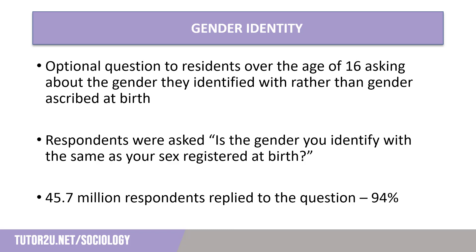A further optional question in the census was gender identity, and once again this was only asked to respondents over the age of 16. Respondents were asked: is the gender you identify with the same as your sex registered at birth? More people responded to this question than the question on sexual orientation, with 94% of respondents replying. However, the missing 6% will be of interest to sociologists, who will try to understand why the question was not answered.